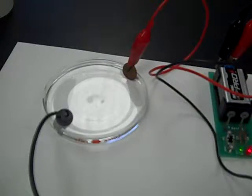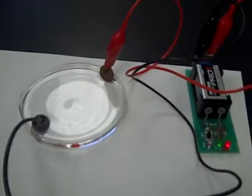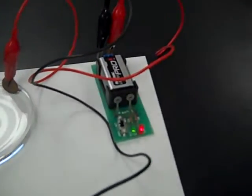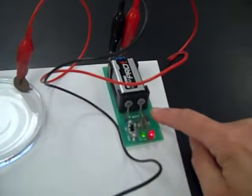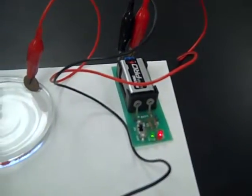Electroplating of copper penny with zinc. The copper penny is made a cathode. The red wire is for cathode and the cathode is connected to the minus sign on the power source battery.